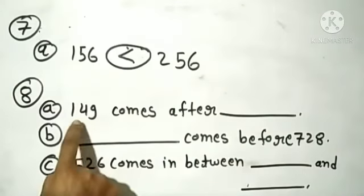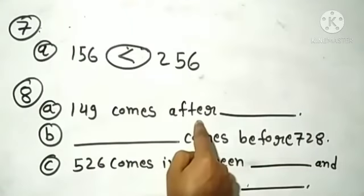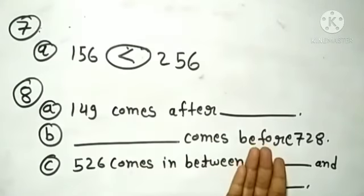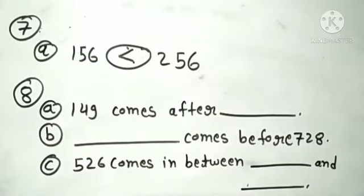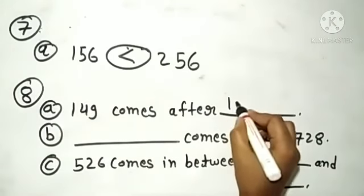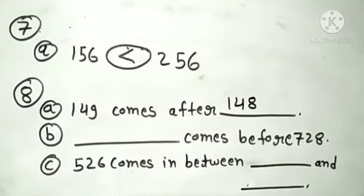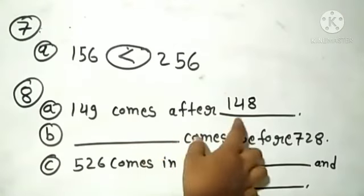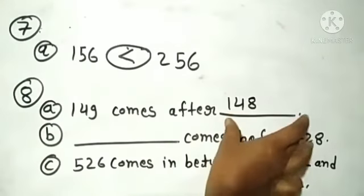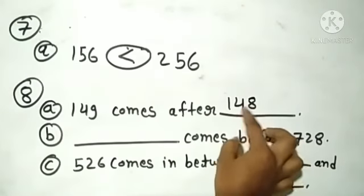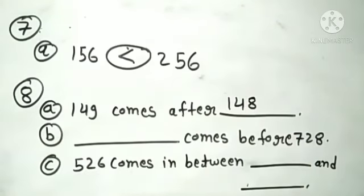So first question देखिए — 149 comes after. 'After' means के बाद। 149 किस number के बाद वाली संख्या है, यह हमें find करना है। 149 किस के बाद आती है? 148 के बाद 149 आता है। So यहाँ पर 148 आएगा। हमें 149 given है, और 149 comes after 148. So 148 हमने fill किया और यह question complete हो गया।